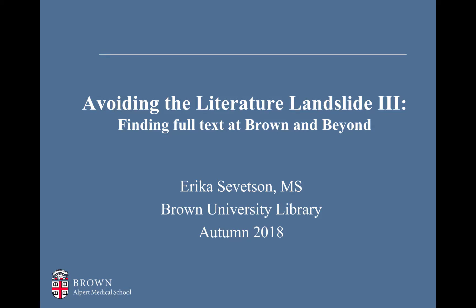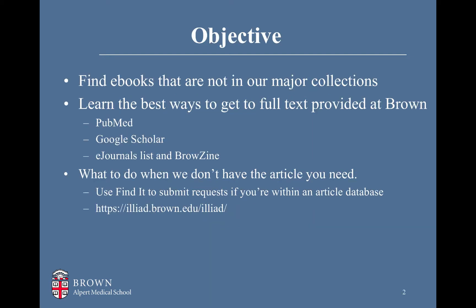Welcome to Avoiding the Literature Landslide, Part 3: Finding Full Text at Brown and Beyond. Our objectives for this module are to find ebooks that are not in our major library collections like Clinical Key or Access Medicine, to learn the best ways to get to full text provided at Brown using databases such as PubMed and Google Scholar or our e-journals list and browsing, and what to do when we don't have the article you need.